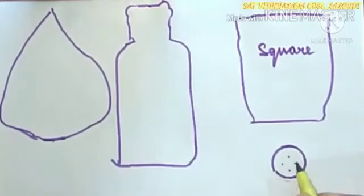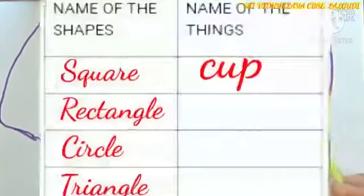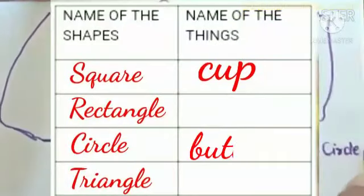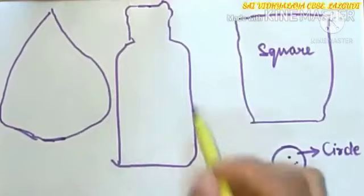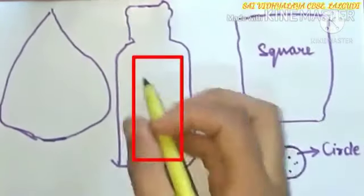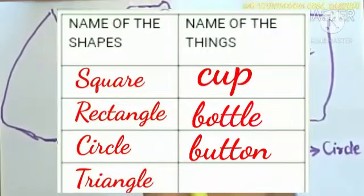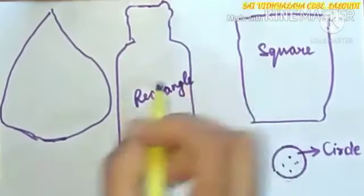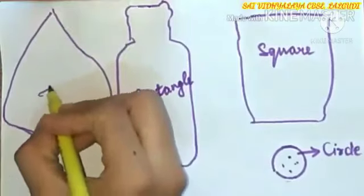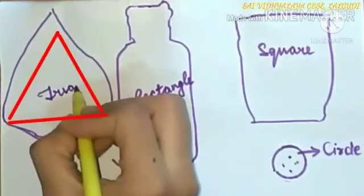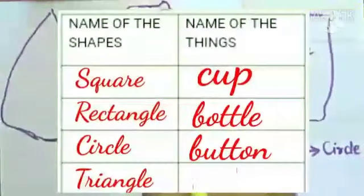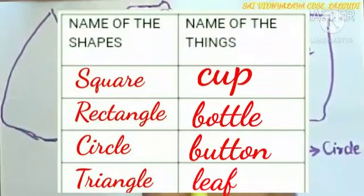This button trace looks like a circle. So, write button in the circle column. And this bottle looks like a rectangle. So, write bottle in rectangle column. And last, this leaf trace looks like a triangle. So, write leaf in triangle column.